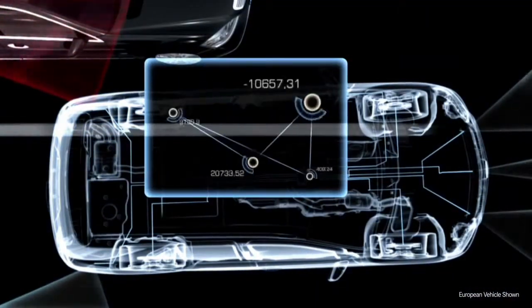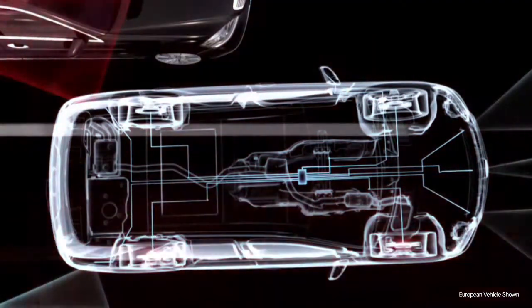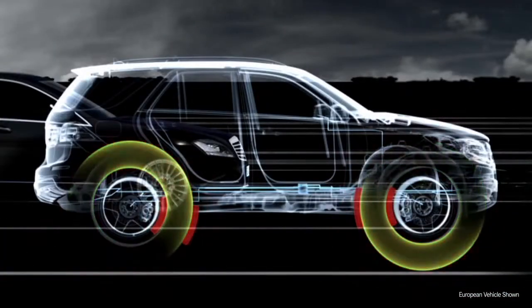Blind Spot Assist can take active measures. By applying the brakes on the wheels on the opposite side of the vehicle, the vehicle is steered out of the danger zone.